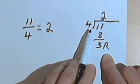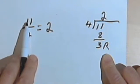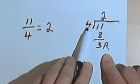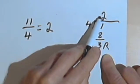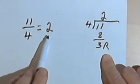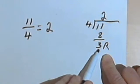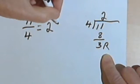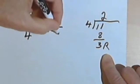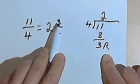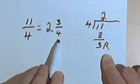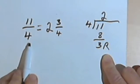The number I get when I divide the denominator into the numerator, that whole number that I get is going to be my whole number. The remainder is going to be the numerator of the fraction part of my mixed number. And the denominator will be the original denominator.